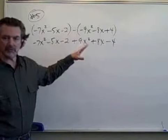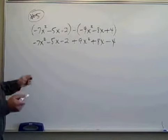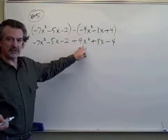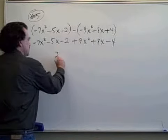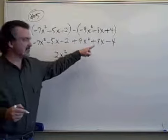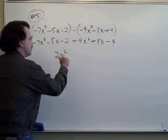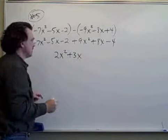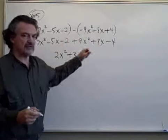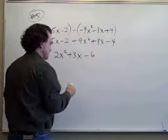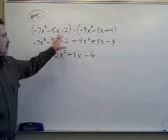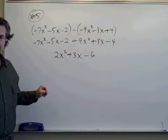Now we can simply combine the like terms that are here. Negative 7x squared plus 9x squared is 2x squared. Minus 5x plus 8x is plus 3x. Minus 2 minus 4 more is minus 6.